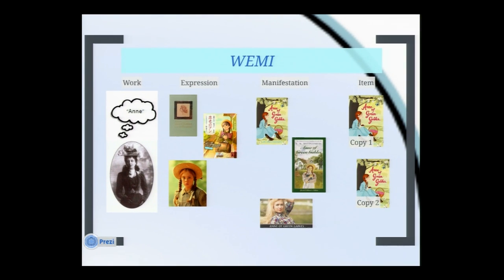A more illustrative example of Work, Expression, Manifestation, Item: the Work is the idea of Anne of Green Gables floating above the author's head. If I ask you, 'Have you read Anne of Green Gables?' I'm not referring to a particular item or manifestation or expression — I'm referring to the Work, the concept of the story. A perfectly valid response would be, 'No, I haven't read it, but I have seen the miniseries.' You acknowledge familiarity with the Work but through the expression of the miniseries, not the written text.